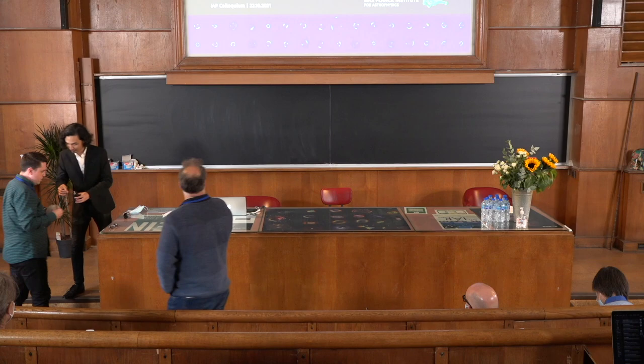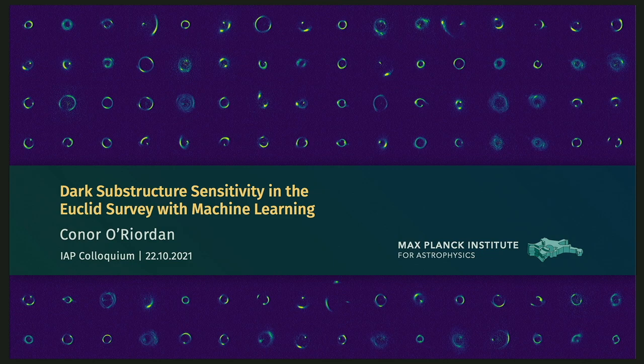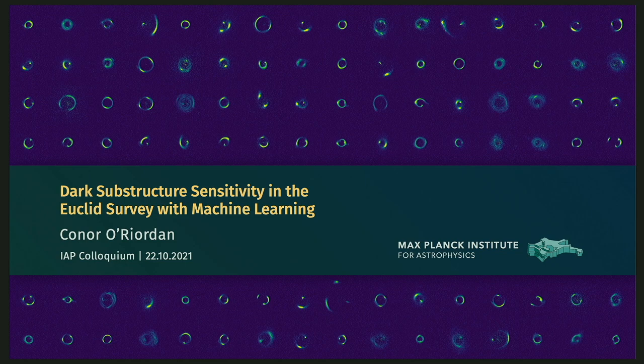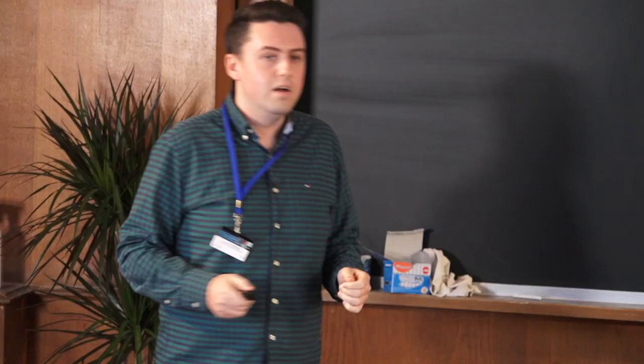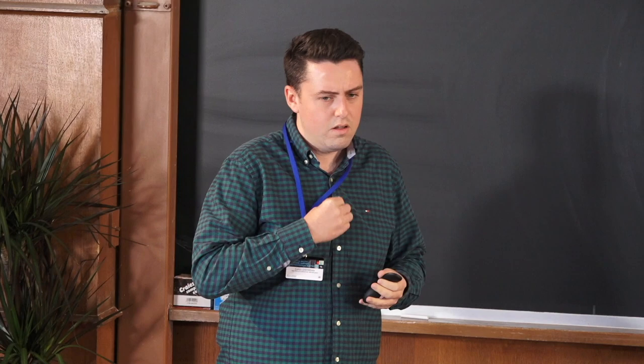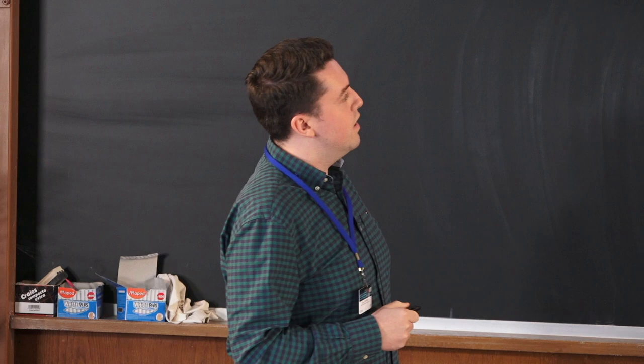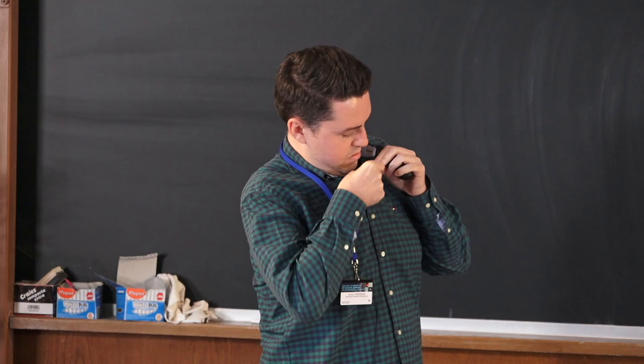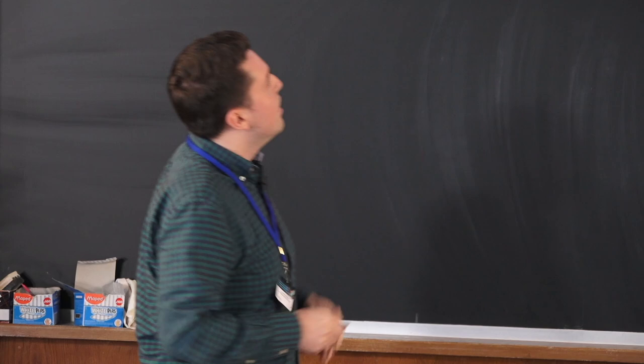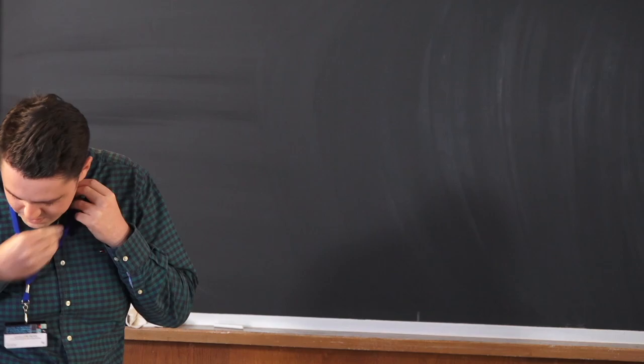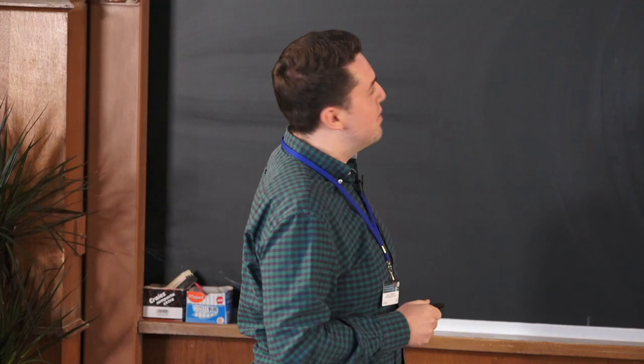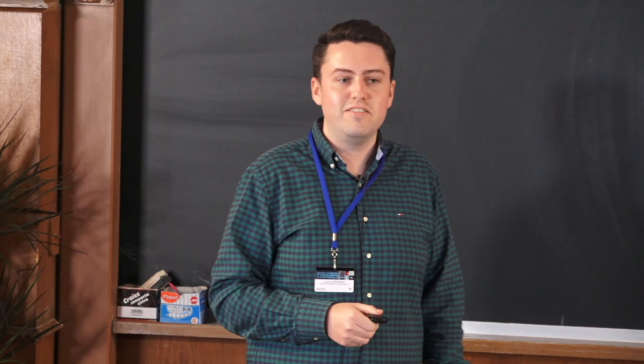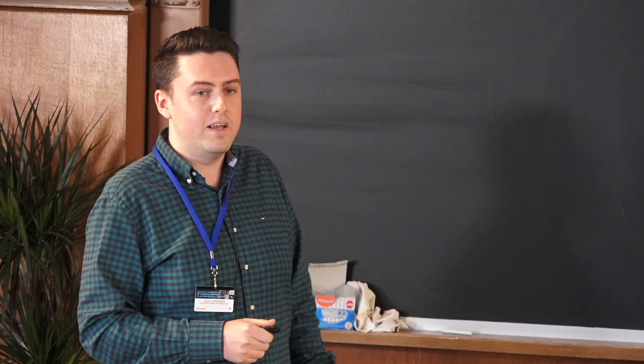And our next speaker is Connor on the dark substructure sensitivity in the Euclid survey with machine learning, please. So, I'm Connor Arridden. I'm a postdoc at the Max Planck Institute for Astrophysics. And in our group, we search for dark matter subhalos inside strong gravitational lenses.